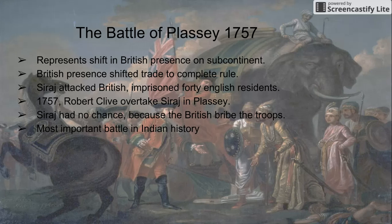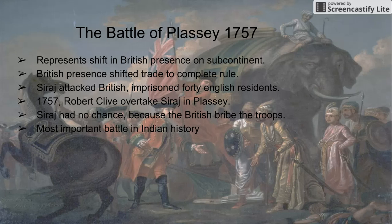The Mughal Emperor was more favorable to the British after the Battle of Swalley. The Battle of Swalley in 1757 represents the shift in British presence. The British presence shifted trade away from the French. Suraj attacked the British and imprisoned 40 English residents, but Suraj had no chance, and the Battle of Swalley was the most important battle in Indian history.